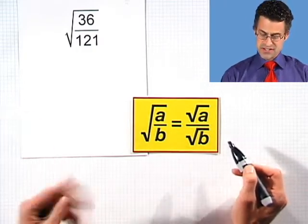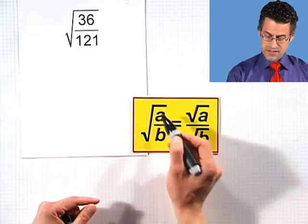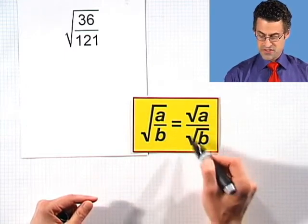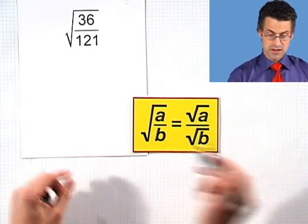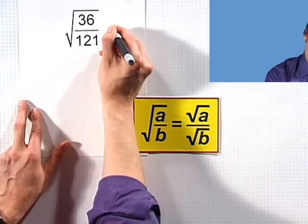The square root of a quotient of two numbers actually equals the quotient of the individual square roots. That's a really fancy way of just saying if you have the square root of something with a top and the bottom, you can take the square root of the top, the square root of the bottom, and divide them.